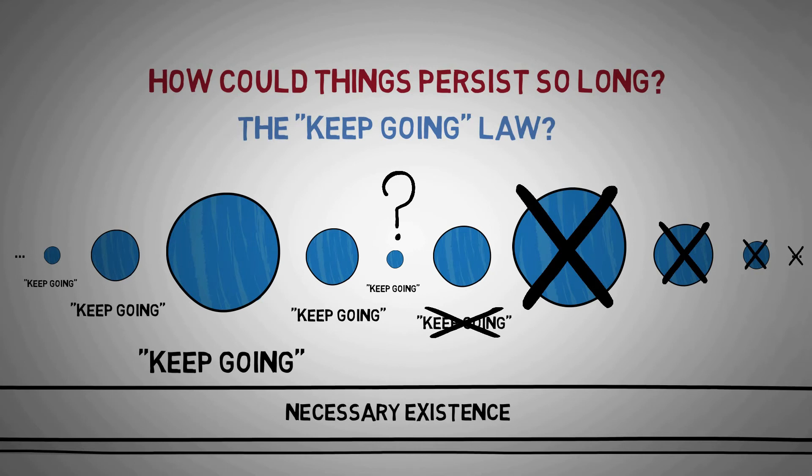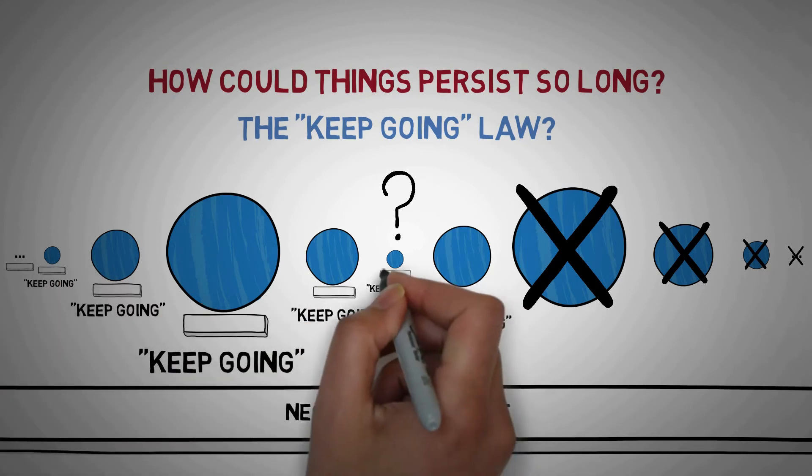For if the ground layer of reality has necessary existence, that would explain why things persist indefinitely. Necessary existence predicts infinite persistence.